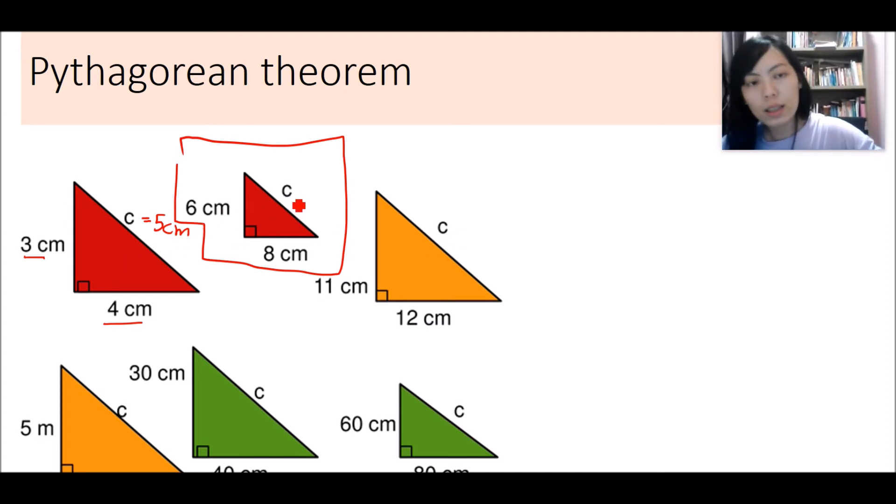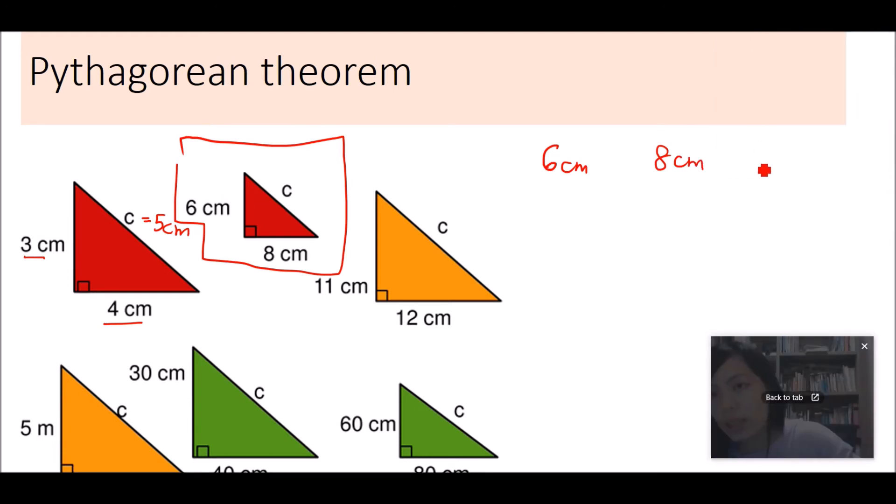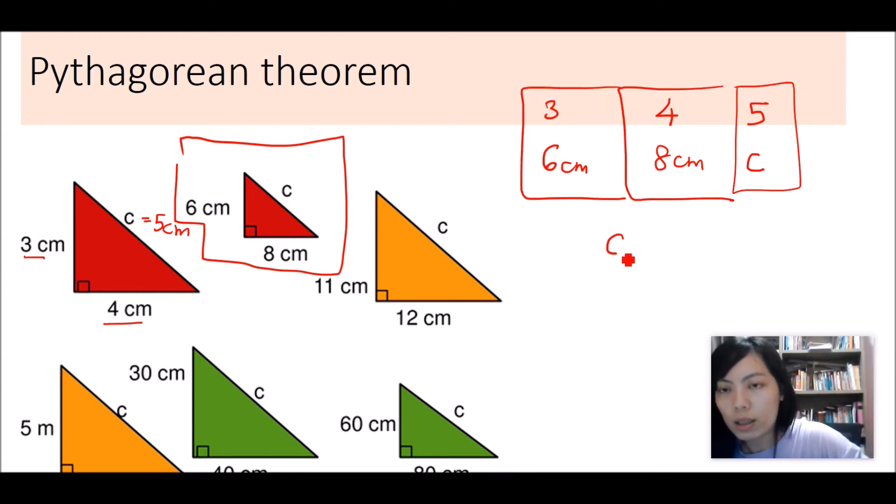As you can see here, c is 6 cm, 8 cm, and this is c here. So this one fits the ratio of 3, 4, and 5. So by looking at this ratio, you know that c is actually 10 cm.